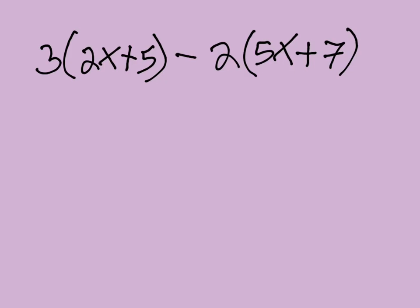The first one's pretty easy. 3 times 2x is 6x, and 3 times 5 is 15.